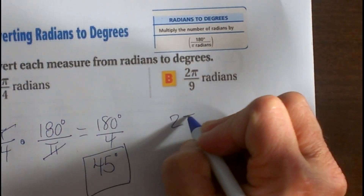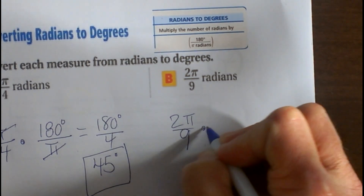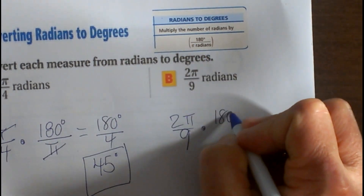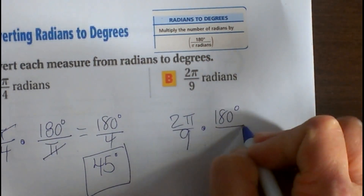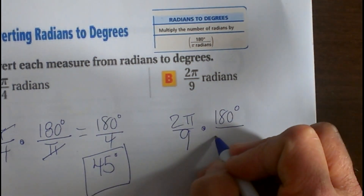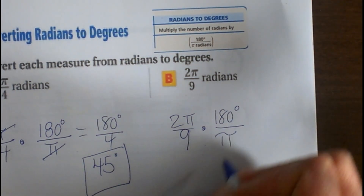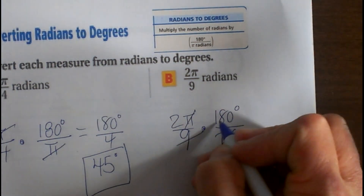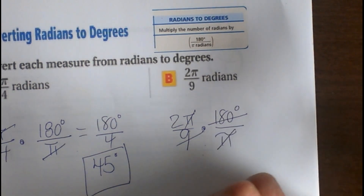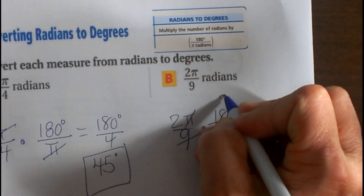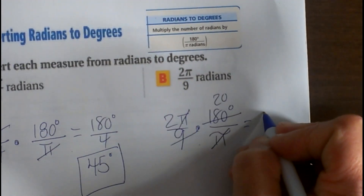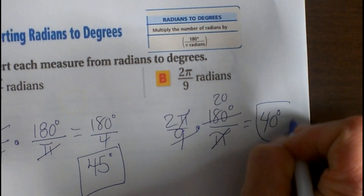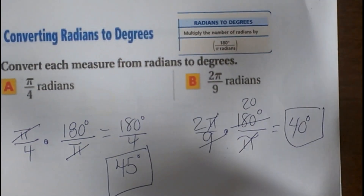Here is one more: 2 pi ninths times. Again, what we want the unit is on top, what we want to get rid of is the unit on the bottom. Pi's cancel, 9 goes into 180 twenty times, so that is going to give us 40 degrees, and that is our answer there.